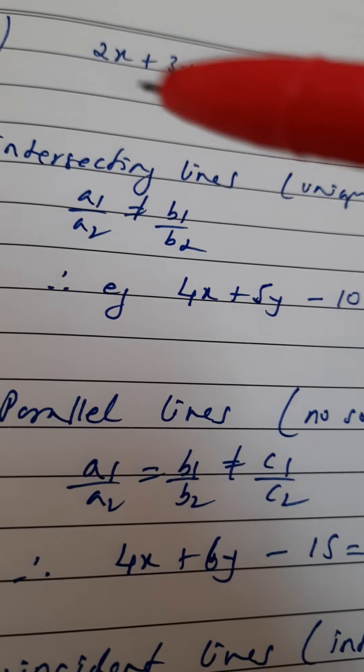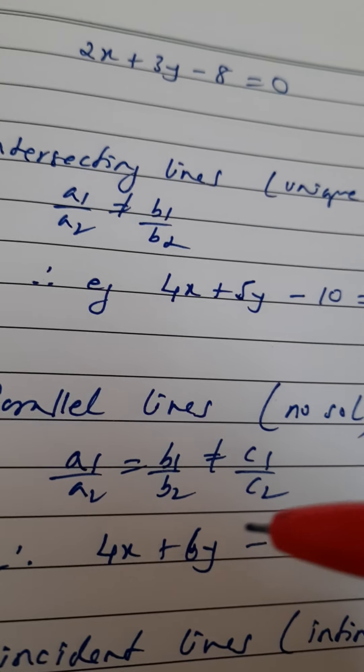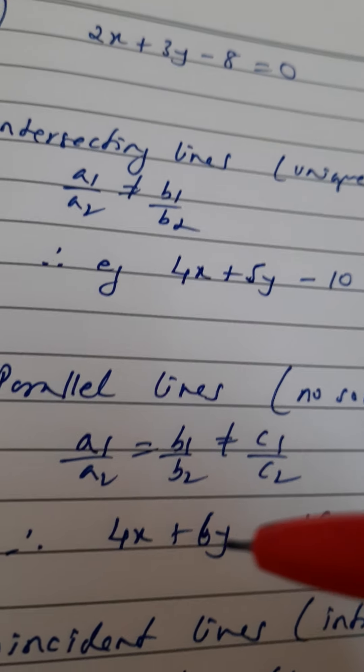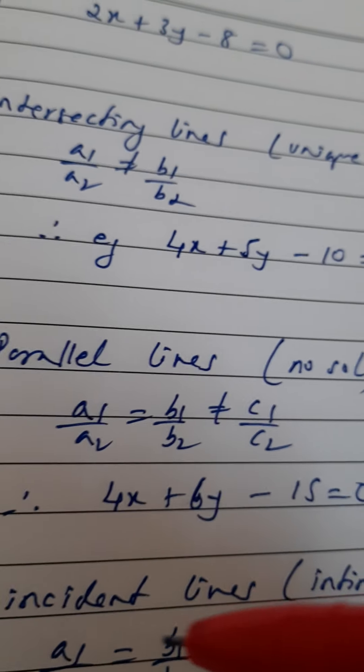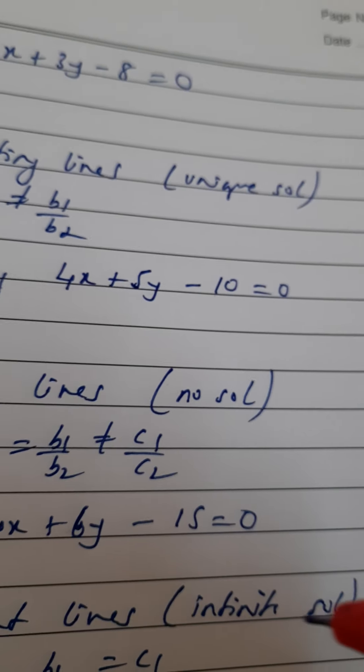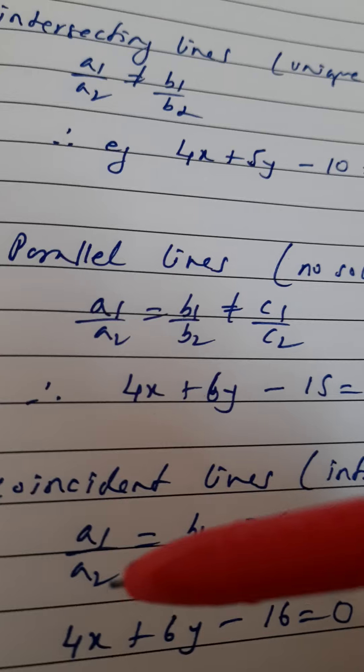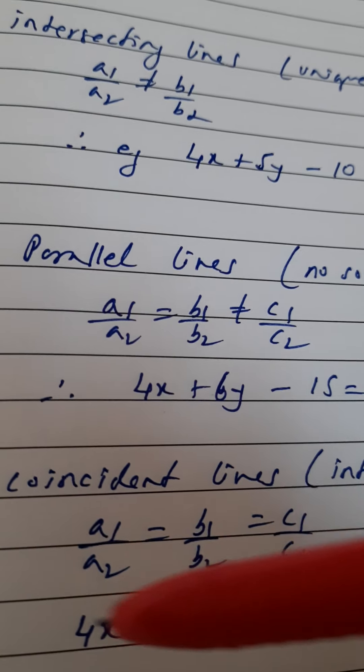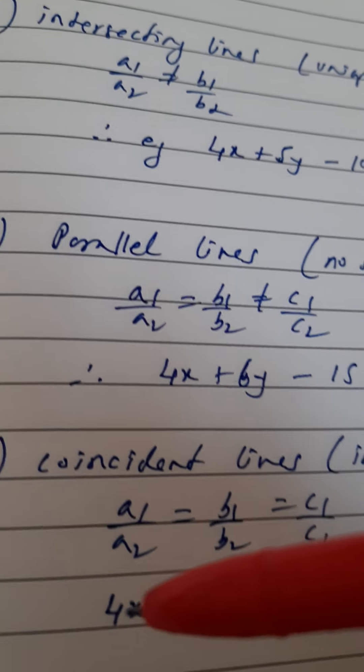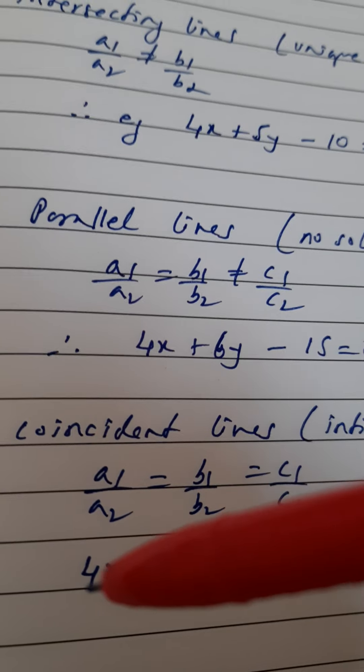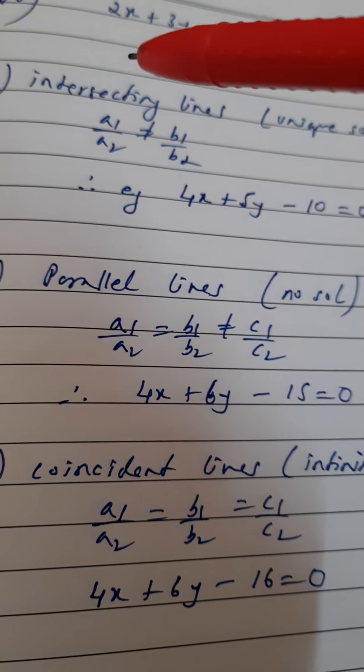Then the third part is coincident lines. Coincident lines happen when we have infinitely many solutions, and what is the condition? A1/a2, b1/b2, and c1/c2 all are equal to each other. So I will choose an equation where the ratio of a1, that is 2, and here 4, so the ratio here is 1 by 2.